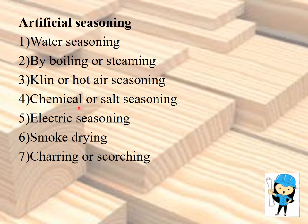Chemical or salt seasoning: the timber is immersed in a solution of a suitable salt which absorbs the moisture from inside the timber. Electric seasoning: green timber offers less resistance to the flow of electric current compared to dry timber; resistance is inversely proportional to moisture content. Smoke drying: timber is dried over a fire of straw. Charring or scorching: the ends of piles or posts are burned to form charcoal in order to remove moisture content.